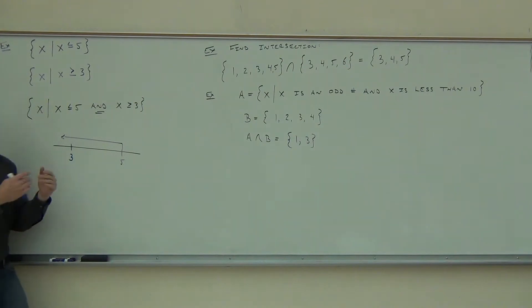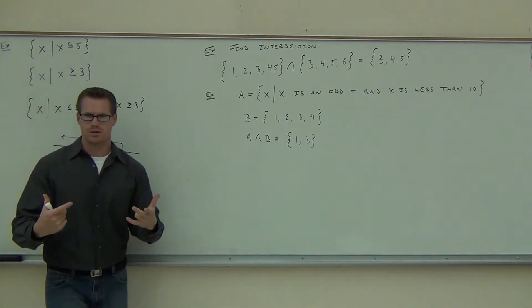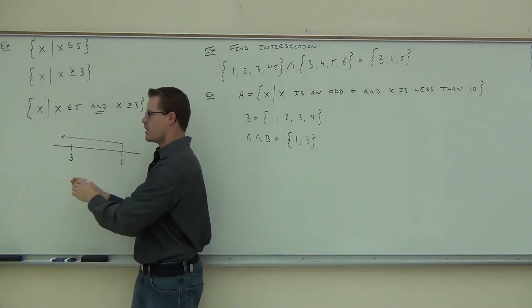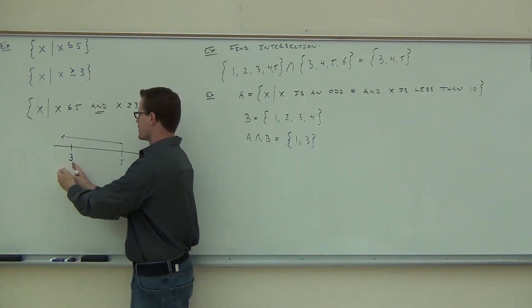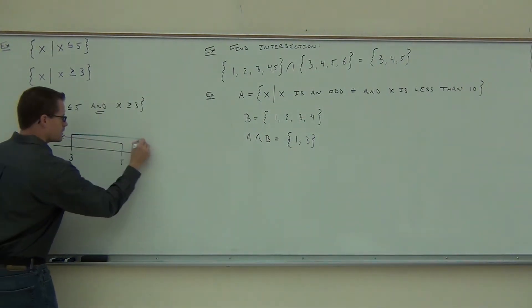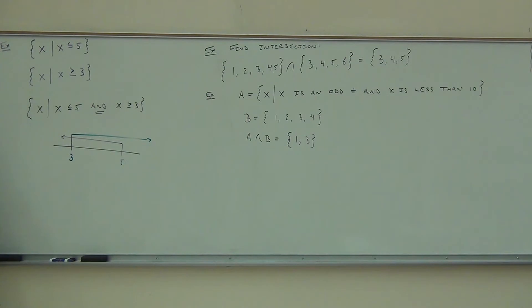So notice what we're doing. We're graphing two different inequalities, right? Graphing x is less than or equal to 5. That's this one. We're going to graph x is greater than or equal to 3. That's this way. What I want you to see is, do they have any crossover?